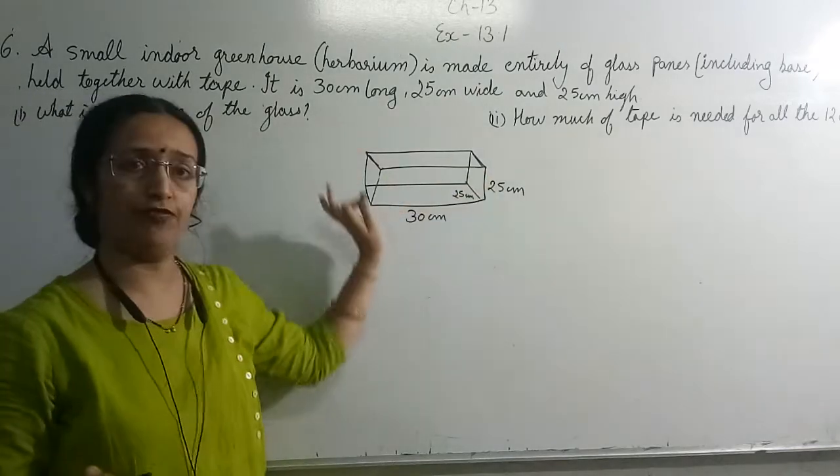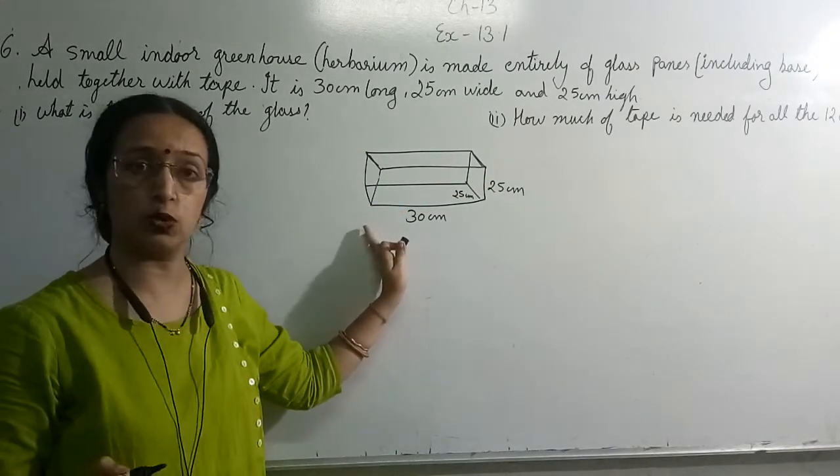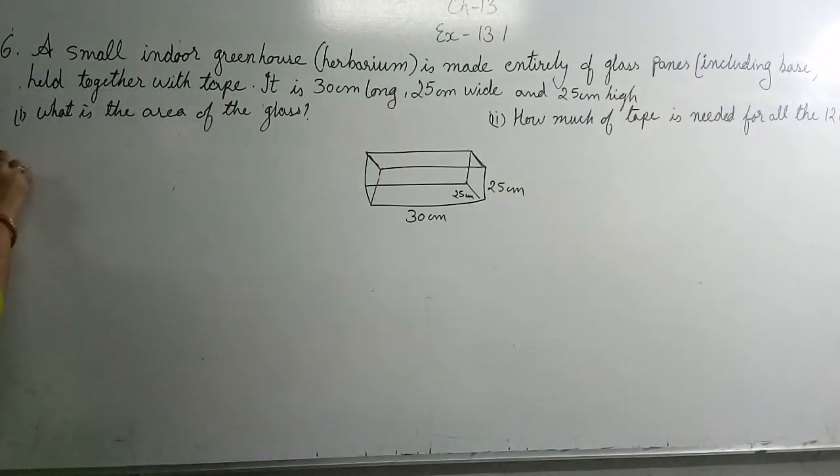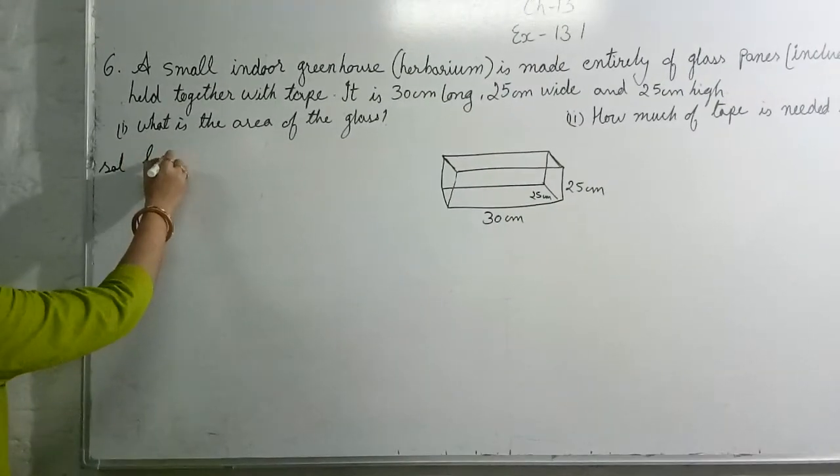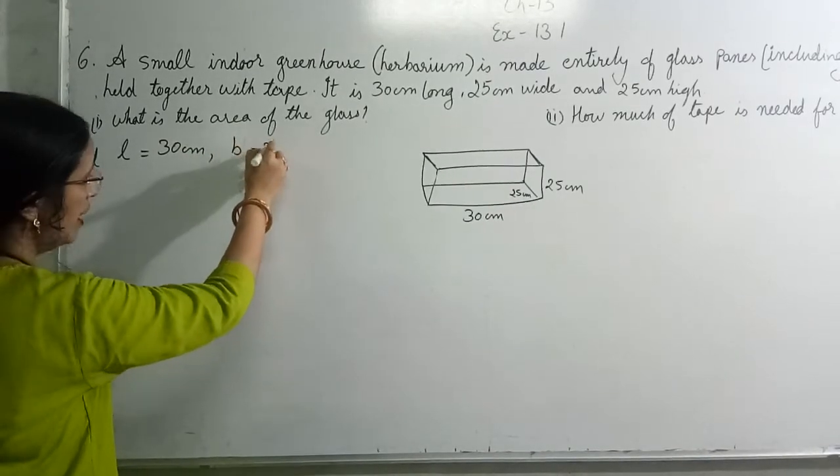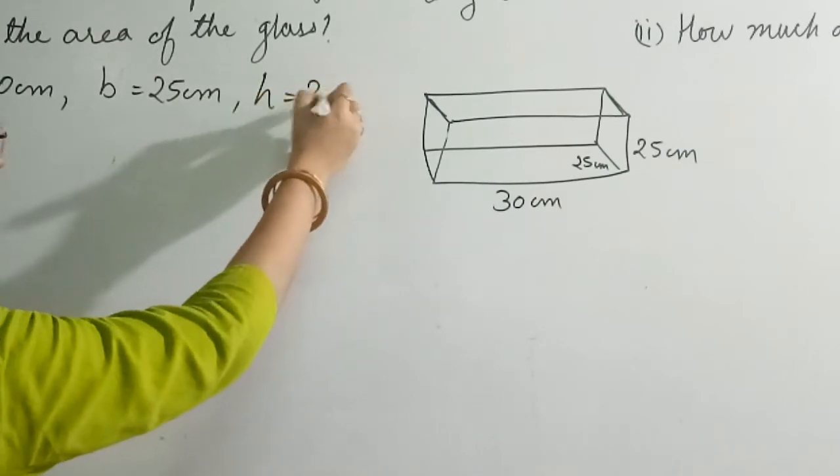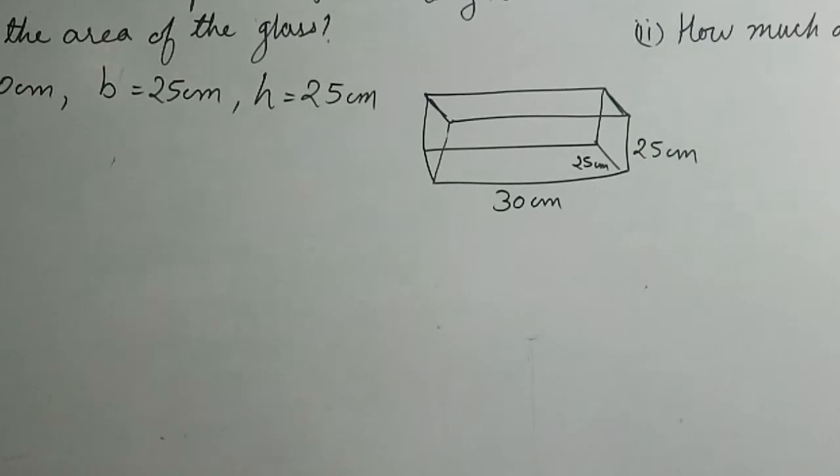The whole box is made up of glass, so in a simple way if you think, that means we have to find the total surface area of the herbarium. So what we will write in the solution: length they have given 30 centimeter, breadth they have given 25 centimeter, and height they have given 25 centimeter. All the things they have given in centimeter only.